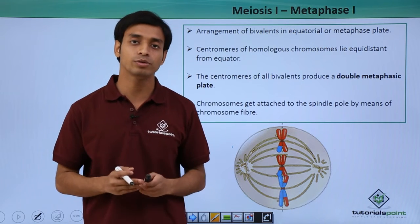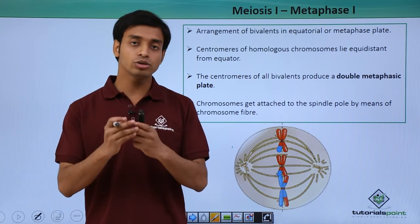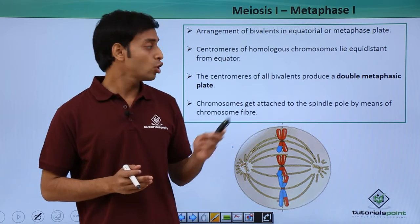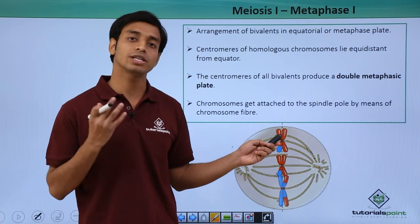Due to this repeated pulling and pushing movement, all the homologous pairs arrange themselves at the equatorial plate or the mid-position of the cell.